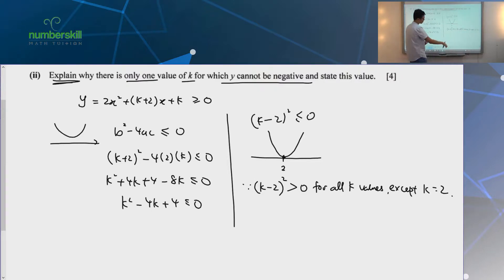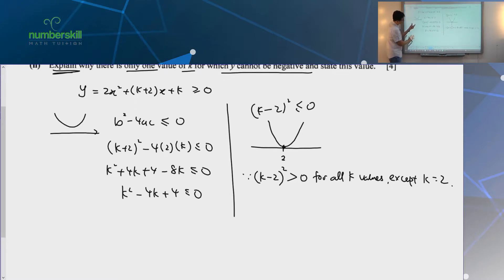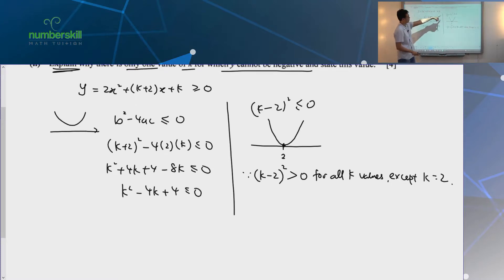k minus 2 whole thing square is positive for all k values except k equals to 2. Make sense? Because it's a perfect square. Right? So, whatever k you put inside, k can be 1 million. It will still be positive. K can be negative 1 million. You minus 2. You square it. It will still be positive. So, k minus 2 square is always positive. No matter what value for K. Except k equals to 2. Because when you put in k equals to 2, it will not be positive anymore. Make sense?